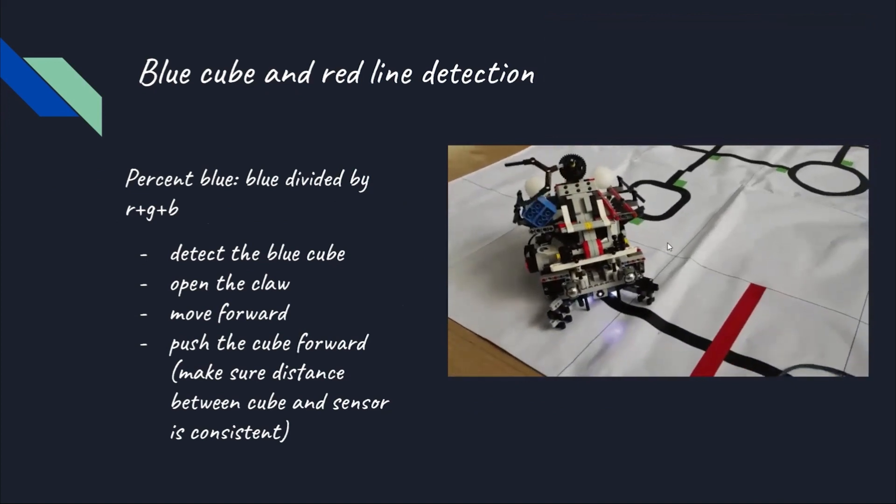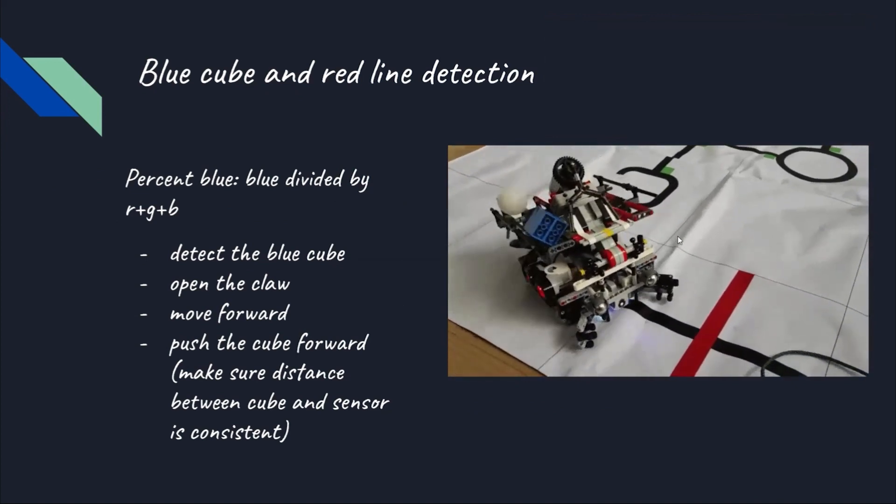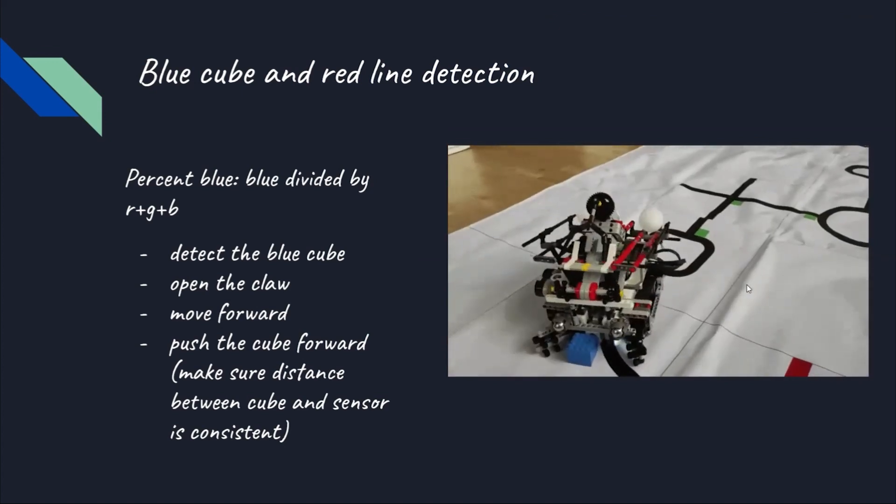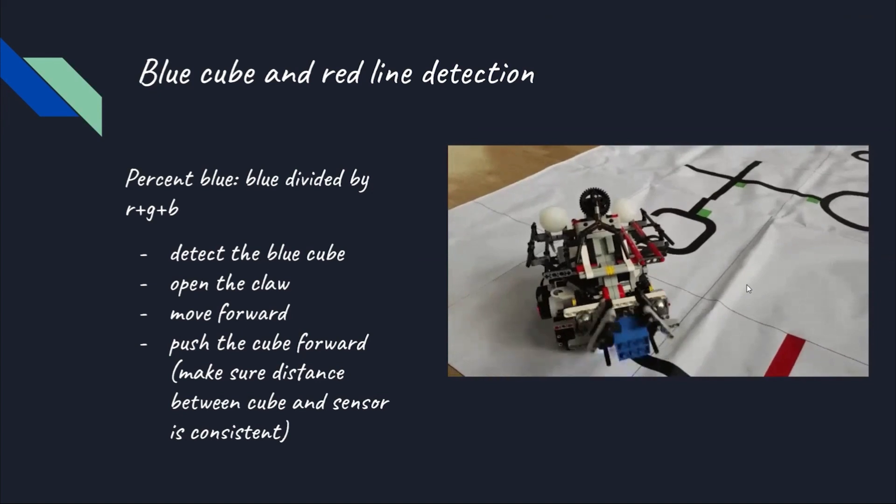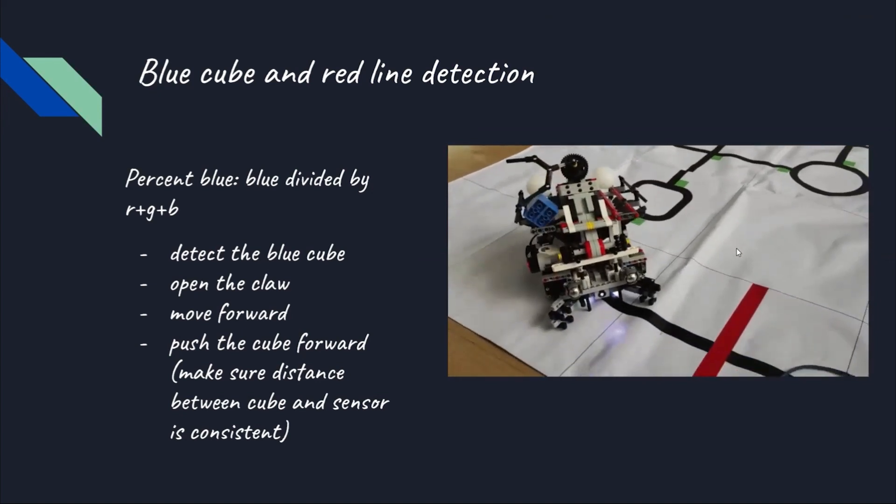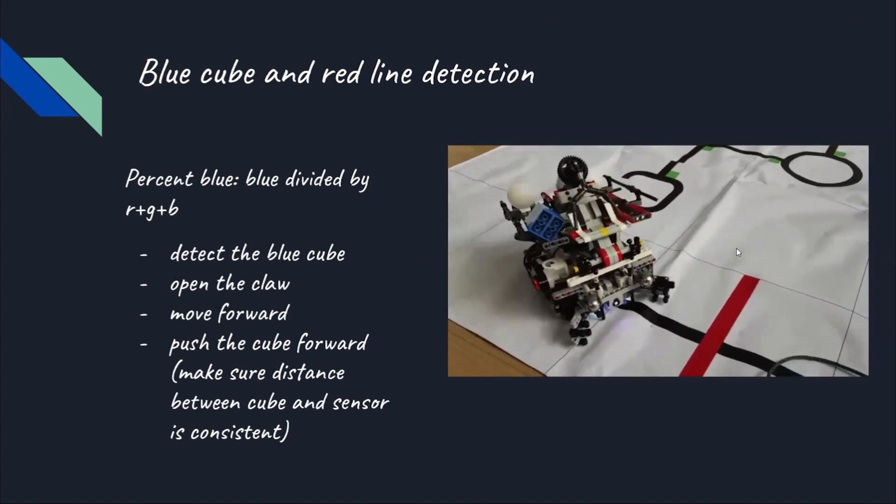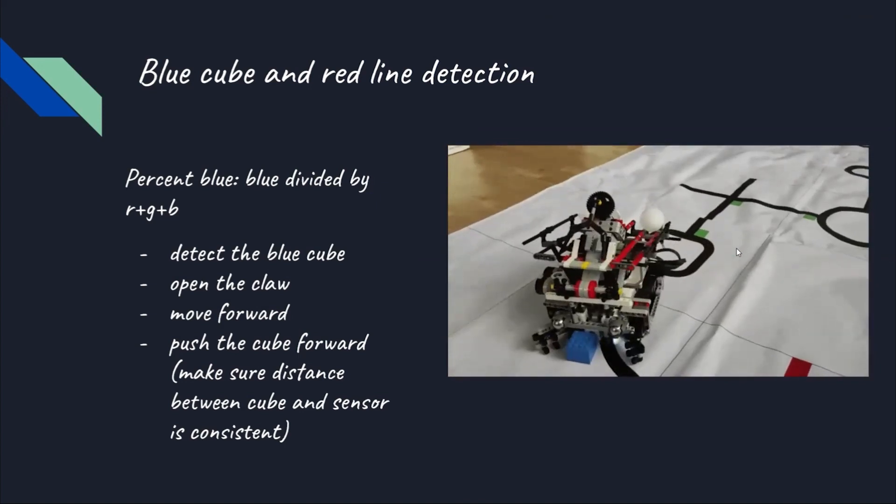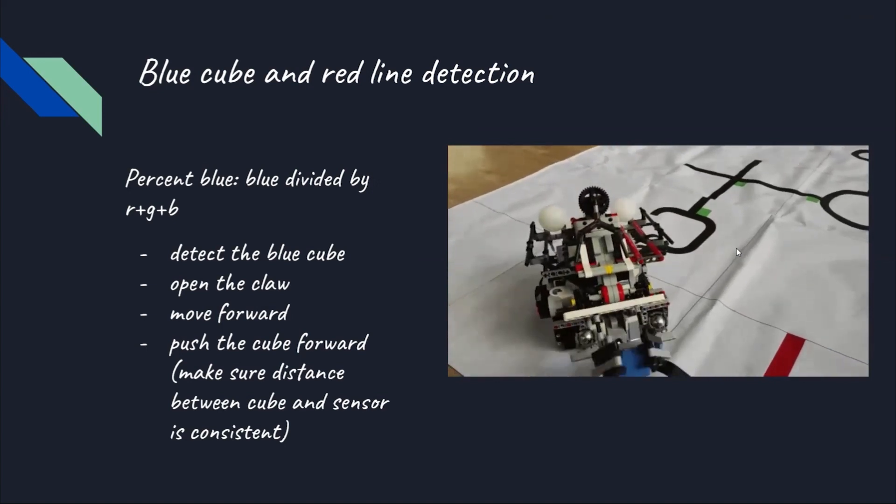Now, we will talk about blue cube detection. We got percentage blue by dividing blue with RGB. When we detected the blue cube, we opened the claw, move forward and push the cube forward, to make sure the distance between the cube and the sensor is constant. We do the same thing with the rescue kit using percentage green.